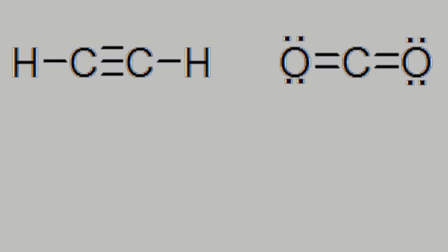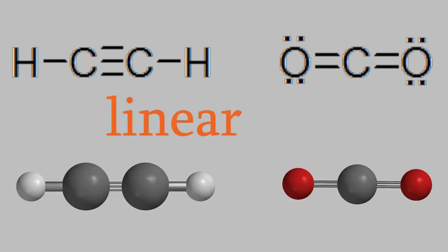Finally, if the central atom has a triple bond, or two double bonds, then the orbitals combine to make hybrid orbitals that form a linear molecule. This type of hybrid is called an sp hybrid. The carbon in carbon dioxide, and also in acetylene, both have sp hybrid orbitals, and that's why these are linear molecules.